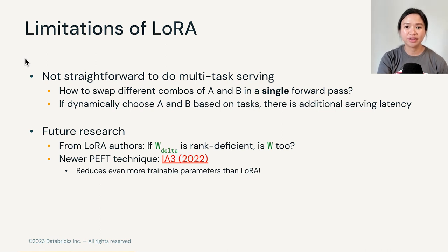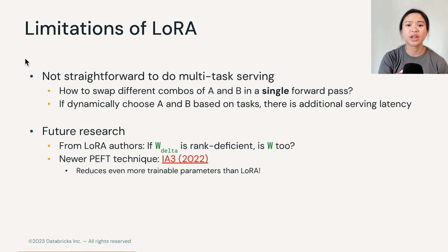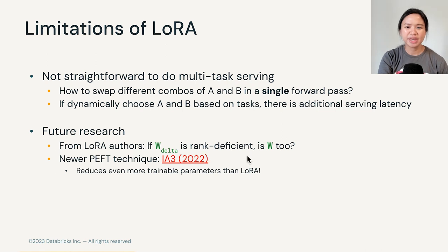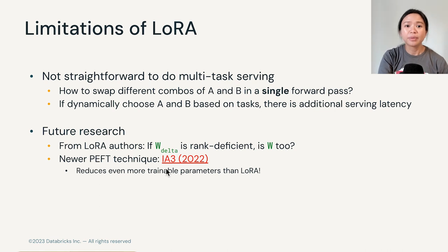Now let's talk about some of the limitations of LoRA. Even though we could theoretically swap different weight update matrices at serving time, it is not straightforward how to do so when we have a single mixed-task batch. If we want to dynamically choose which composed weight matrices A and B to use at serving time, then there is additional serving latency. There are also open research questions, such as why do we only decompose W_delta — can we decompose other matrices like the original weight matrix, or reduce the number of parameters even more? In fact, there is already a newer PEFT technique called IA3 that improves upon LoRA and can reduce even more trainable parameters.